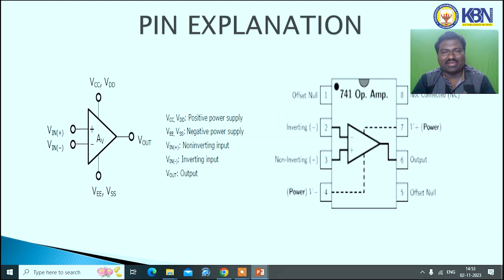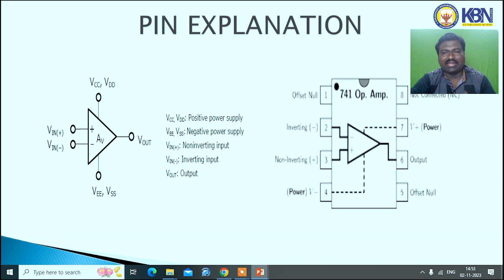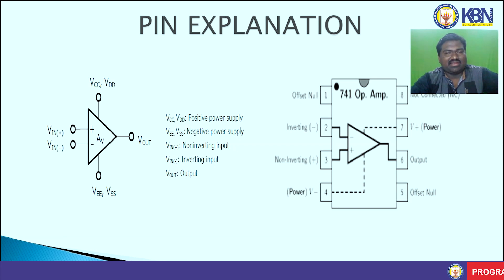This is the pin configuration of IC741. It has eight pins: pin 1 is null offset voltage, pin 2 is inverting terminal, pin 3 is non-inverting terminal, pin 4 is minus VCC, pin 5 is offset null, pin 6 is output, pin 7 is plus VCC, and pin 8 is no connection. In the symbol shown here, V-in-plus means non-inverting terminal, V-in-minus is inverting input terminal, and plus VCC is represented by VCC or VDD, and minus VCC is represented by negative VCC.